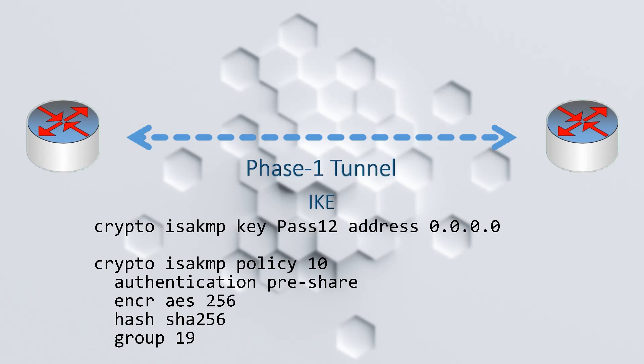These are definitely considered secure today, at the time of this recording. But security is a moving target, so when you go to configure this for yourself, you should check that these are still considered secure. When both ends have agreed on all parameters and have authenticated, they have established a connection. This connection is called a security association, or SA. The SA is a list of all the important information used in this connection.